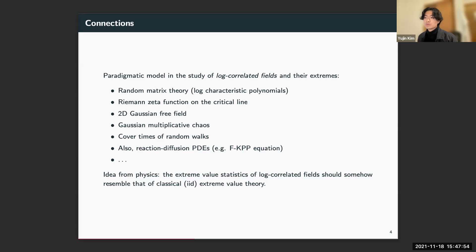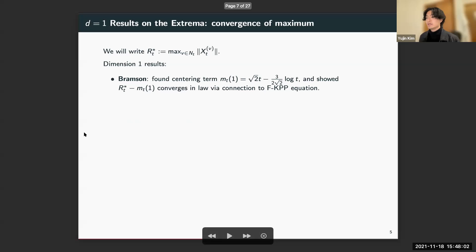We're interested in the extremal particles of BBM, so the collection of particles with the largest modulus. We'll start the discussion with the maximum and with dimension one results. In general, I'll write r_t^* to denote the maximum modulus of the system at time t.